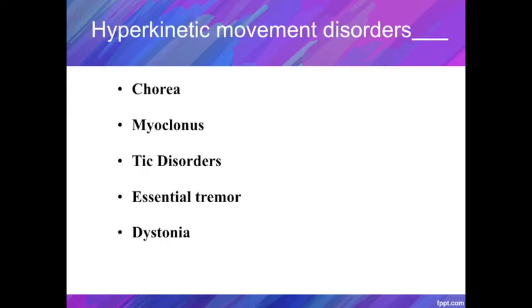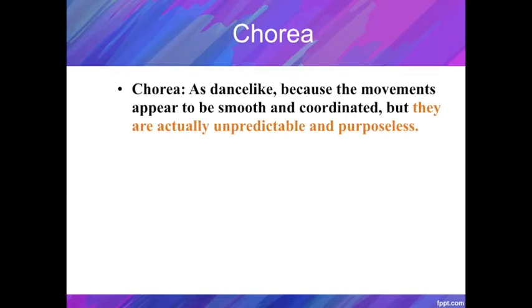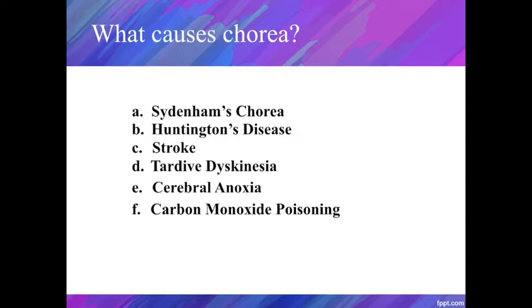Several hyperkinetic movement disorders can lead to hyperkinetic dysarthria. Chorea is often described as dance-like because it appears to be smooth and coordinated, but the movements are actually unpredictable and purposeless. It can be found in cases of many medical conditions: Sydenham's chorea, Huntington's disease, stroke, tardive dyskinesia, cerebral anoxia, and carbon monoxide poisoning. Here is an example of a patient with tardive dyskinesia — he tried to speak and eat his meals, but the involuntary jaw and facial movements interfered with his speech and eating.